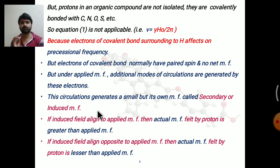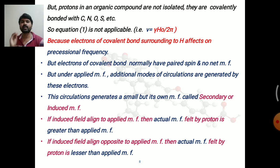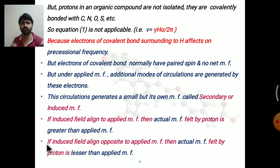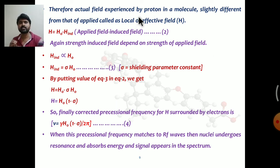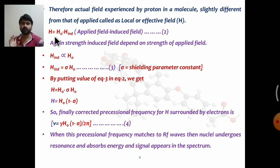This secondary or induced magnetic field plays a very important role because it affects the precessional frequency of the proton. If the induced field is aligned with the applied magnetic field, the actual field felt by the proton will be greater than the applied field. If the induced field is aligned opposite to the applied field, the actual field felt by the proton will be lesser than the applied field. Therefore, the actual field experienced by a proton in a molecule is slightly different from the applied field, and this is called the local or effective field, expressed as H = H₀ − H_induced.